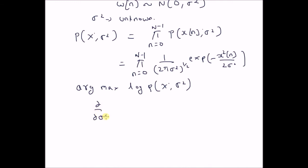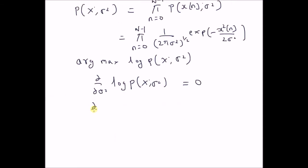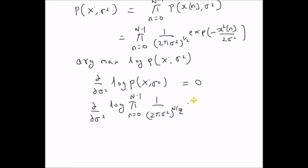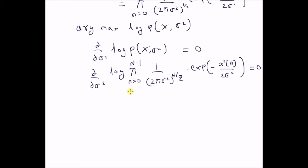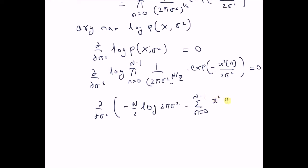This can be achieved by equating the first derivative of the log-likelihood function to 0, that is the derivative with respect to σ² of the logarithm of the product from n=0 to N−1 of (2πσ²)^(−N/2) multiplied by exp(−x²(n) / (2σ²)) equals 0. Since the logarithm of a product becomes a sum of logarithms, we have the derivative with respect to σ² of −(N/2)ln(2πσ²) minus the sum from n=0 to N−1 of x²(n)/(2σ²) set equal to 0.